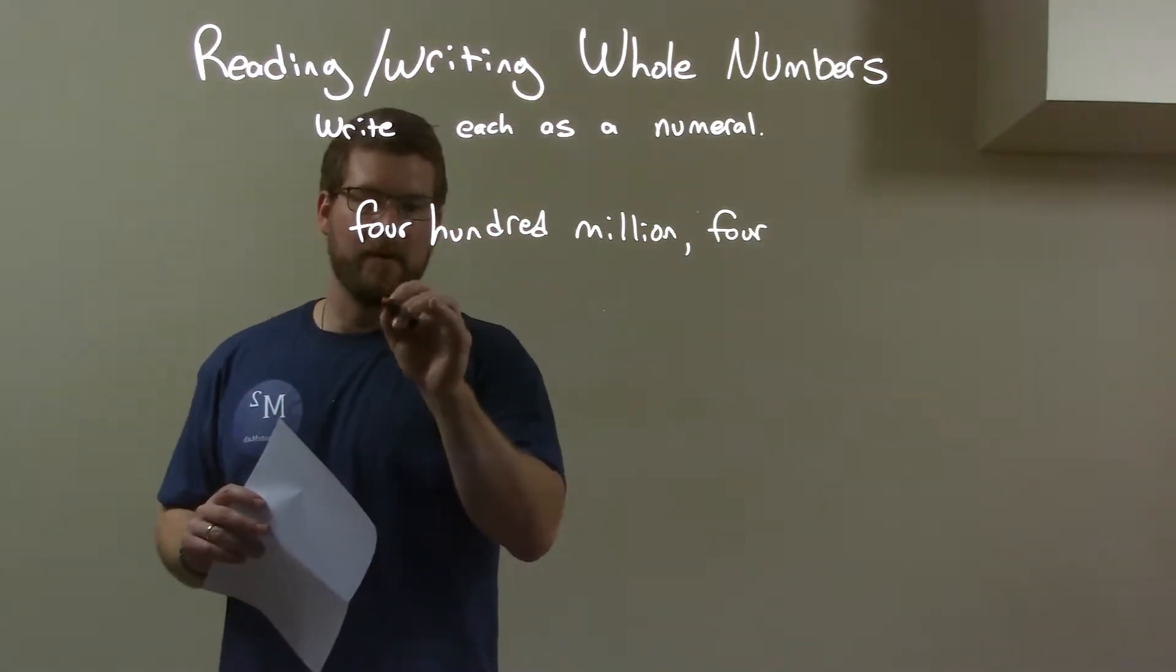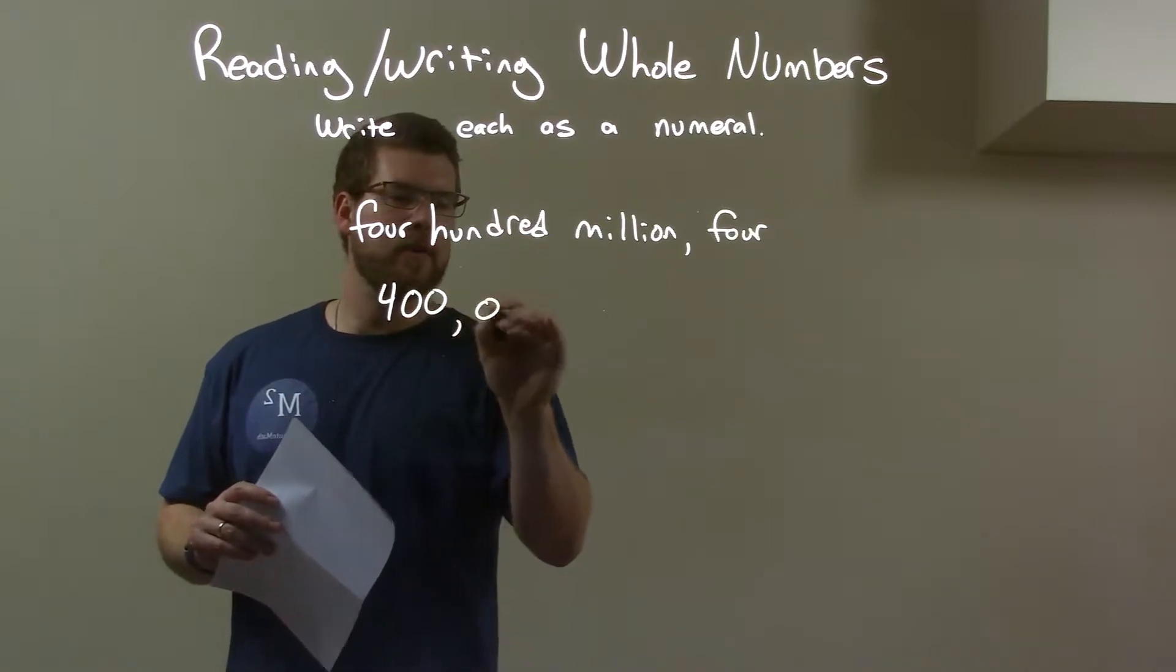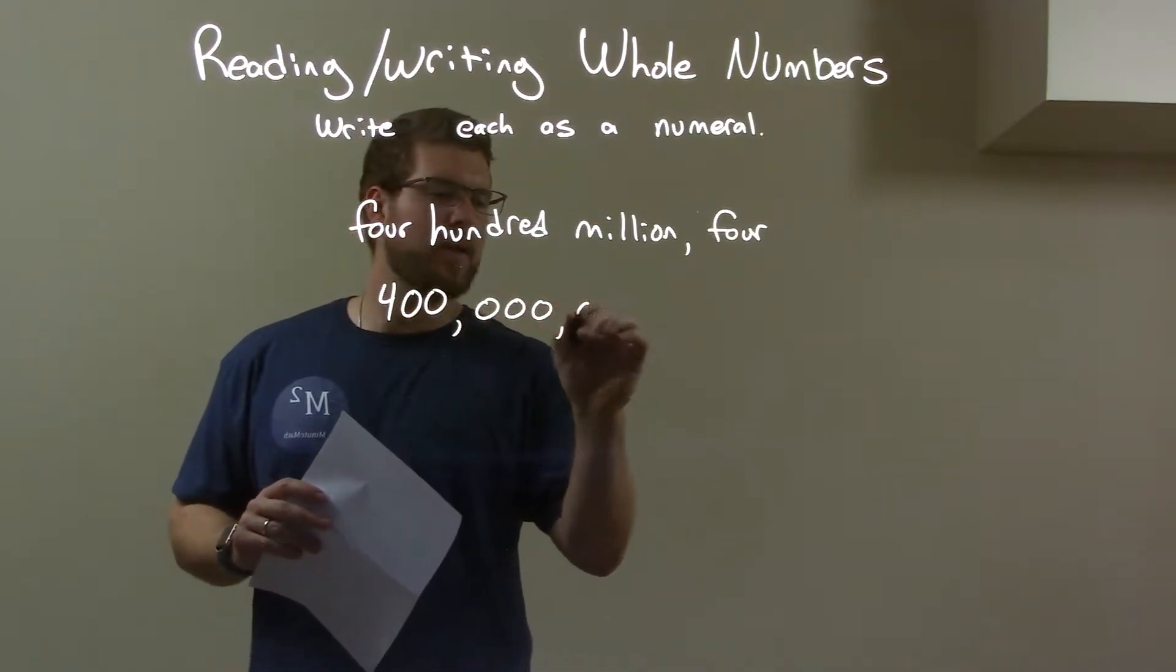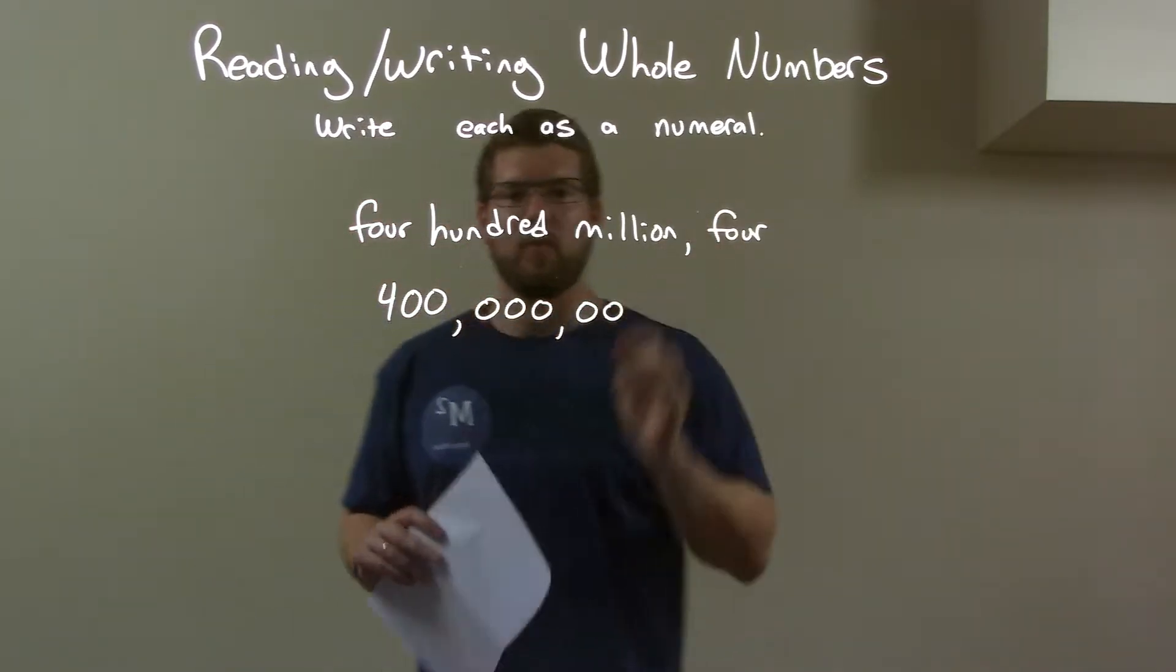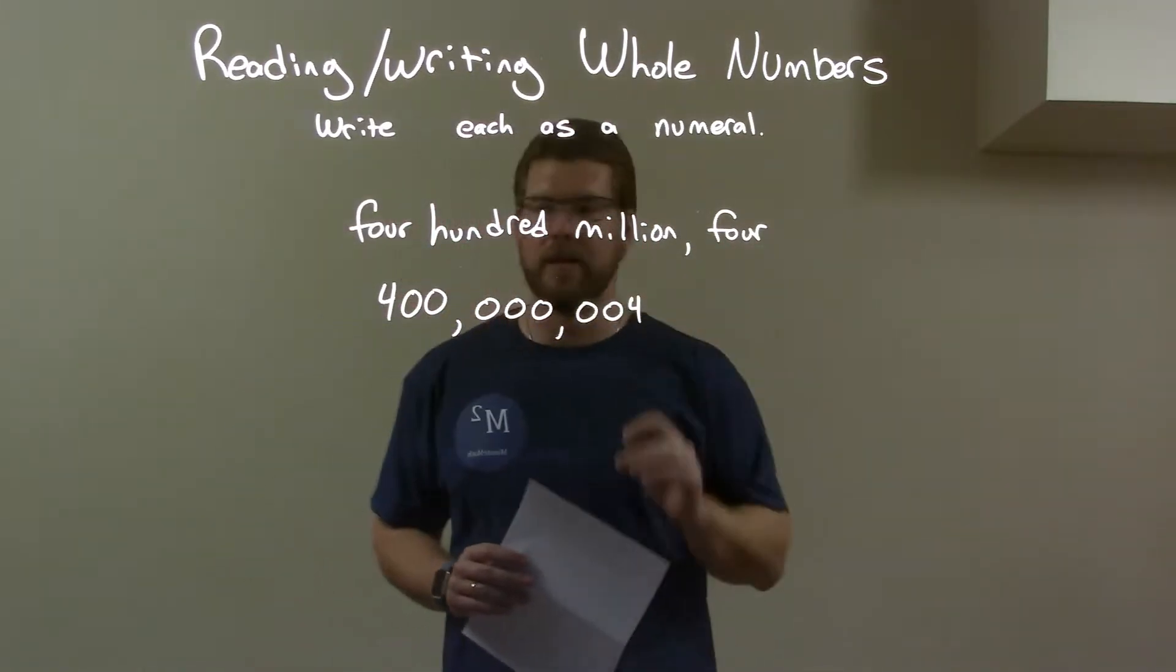Well, first the 400, right? So you have 400, but that's four hundred million. So we're going to have a whole bunch of zeros, total of six afterwards. But when we get to the end, where the four is, right? The last number four, in the one's digit, or one's place right there.